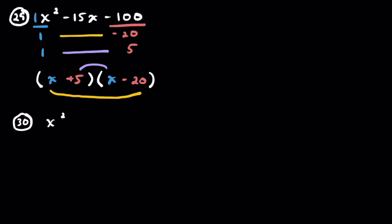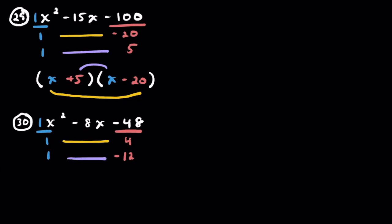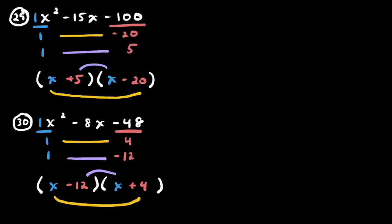Problem 30: x squared minus 8x minus 48. Let's list factors: 1 and 48, 2 and 24, 3 and 16, 4 and 12 — those are 8 apart. So negative 12 and positive 4, that's negative 8. Pairing these and filling in: (x + 4)(x − 12). Everything checks out. That's problems 21 through 30.